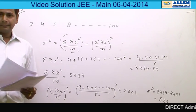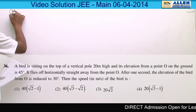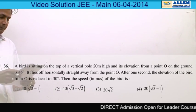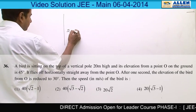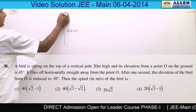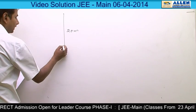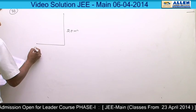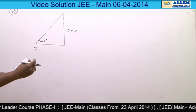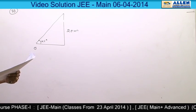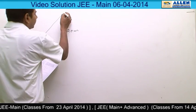Now our next question is question number 36. This question is based upon heights and distances. A bird is sitting on the top of a vertical pole 20 meters high, and its elevation from a point O on the ground level is 45 degrees. This means this angle is 45 degrees. It flies off horizontally straight away from the point O, it means bird flew in this direction.